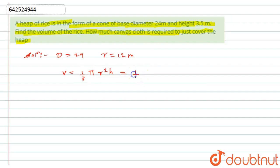This will be 1/3, then value of π is 22/7 into value of r we have calculated that is 12 squared into h. H is given to us, that is 3.5 meters. I will put here 3.5 meters.